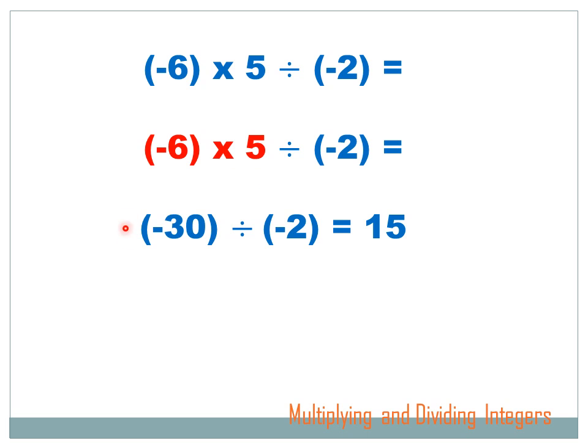-6 times 5 equals -30. I've got one negative and one positive, so my answer is going to be negative. Now my problem is -30 divided by -2. I've got a negative number divided by a negative number. Negative divided by negative is going to give me a positive answer. 30 divided by 2 is 15.